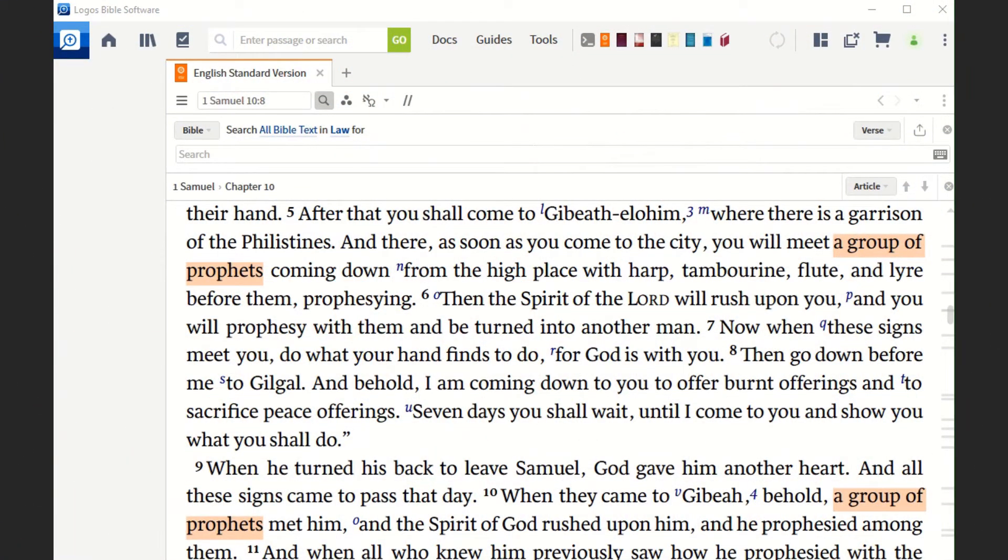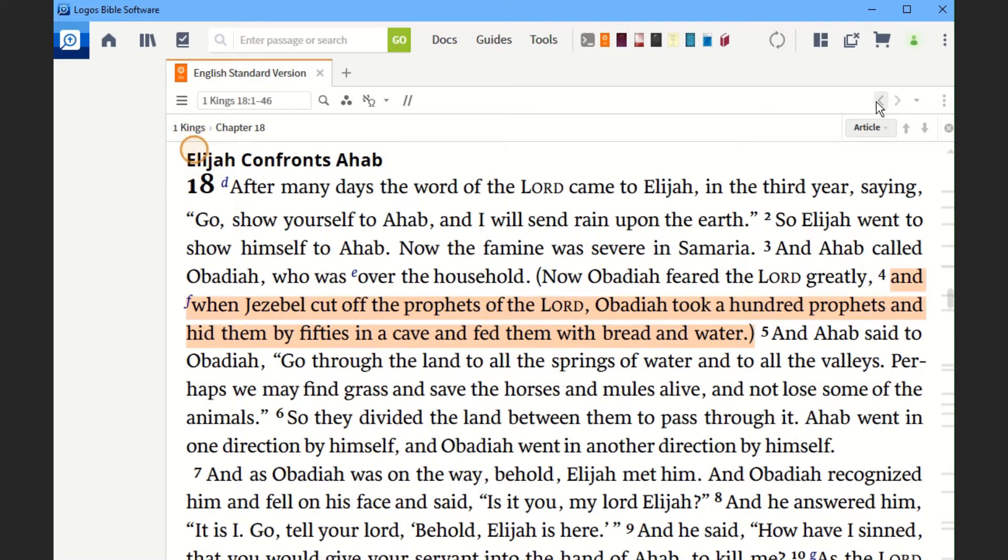In some passages of Scripture it becomes evident that there were larger groups of prophets at the time in question. Both in 1 Samuel chapter 10, shown here, and in 1 Samuel chapter 19, Saul encounters a group of prophets. Both times he is overwhelmed by the presence of the Spirit in their midst. In 1 Kings 18, it is reported that Queen Jezebel, here in verse 4, has been killing the prophets of the Lord, but that a certain Obadiah, who was over the king's household, hid and cared for 100 of these prophets.